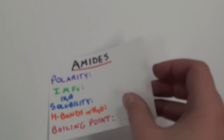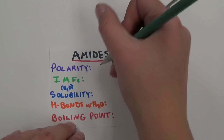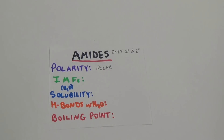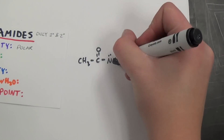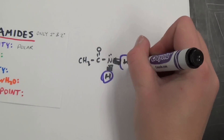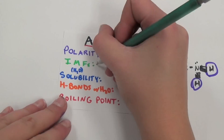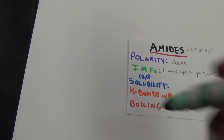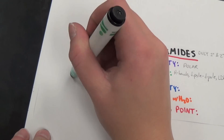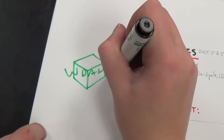The final item on our list and the most polar functional group is amides — but only first and second degree. The nitrogen bonded to hydrogens provides additional locations for hydrogen bonding between molecules to occur, which makes this functional group's intermolecular forces very strong. In fact, they are so strong that some amides are even solids at room temperature.